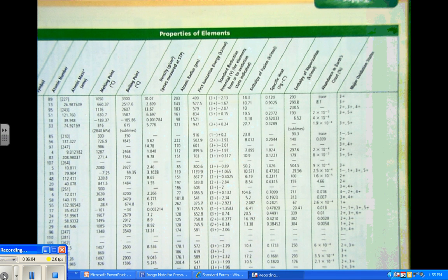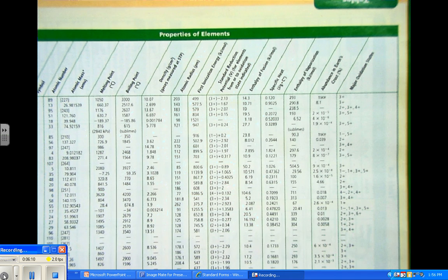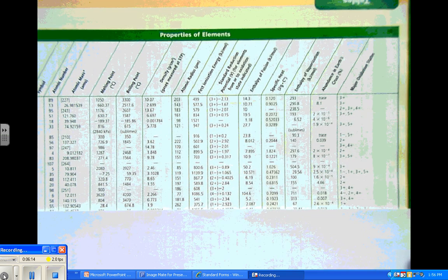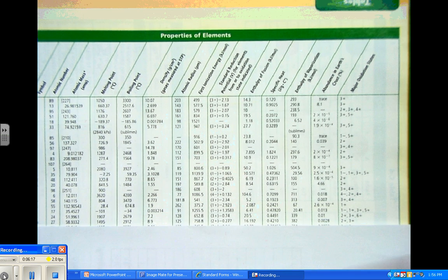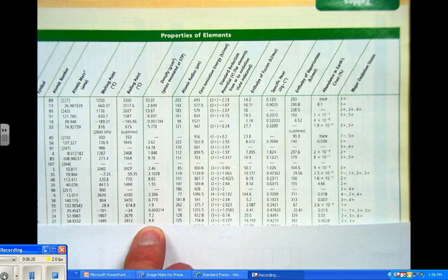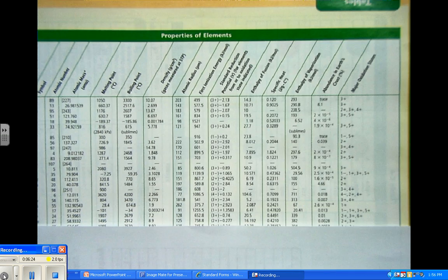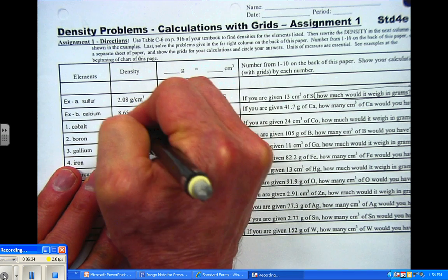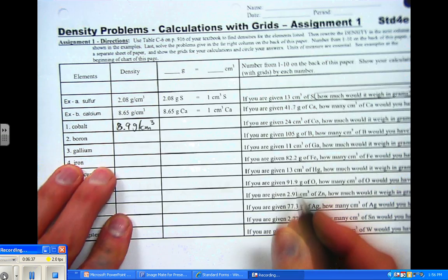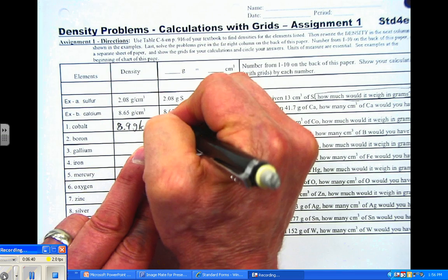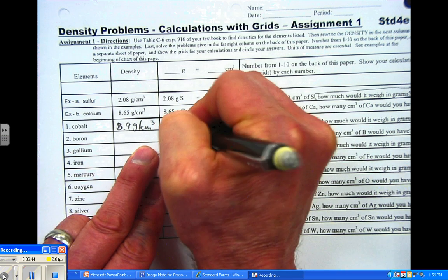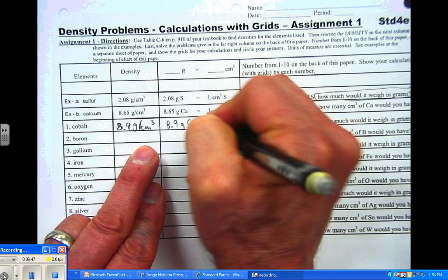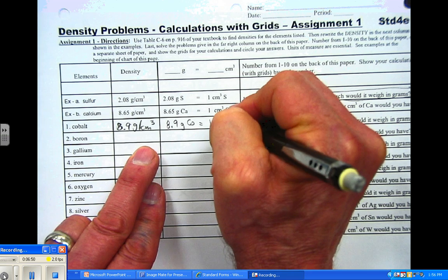Now, for the first problem that deals with cobalt, we're going to have to figure out what the density of cobalt is. And we do that by going to page 914 in the book, and we look for cobalt. And we see over here that cobalt weighs or has a density of 8.9 grams per cubic centimeter. So that's what we're going to put into the first column, 8.9 grams per cubic centimeter. And when we write that as an equality or a ratio, either one, you can say it either way, we have this many grams of cobalt, 8.9, and that's equal to one cubic centimeter of cobalt.